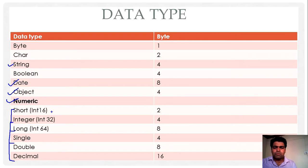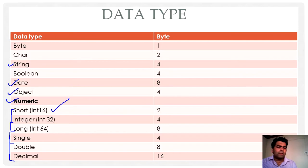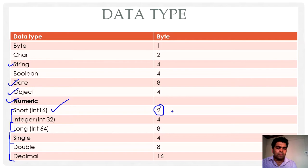Suppose we have to store any number in our program, we can use short. The IL encoding is Int16 and it takes 2 bytes in memory. These data types have a pre-specified range, and we will use data types according to that range. If you use integer, it takes 4 bytes in memory and the IL type is Int32.